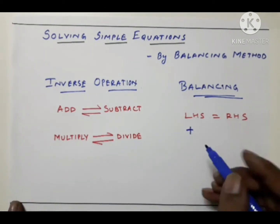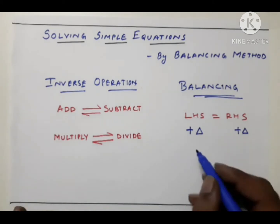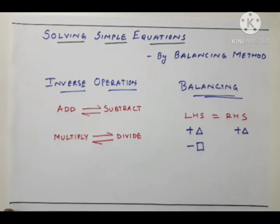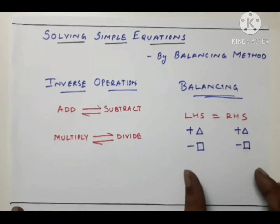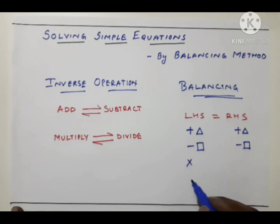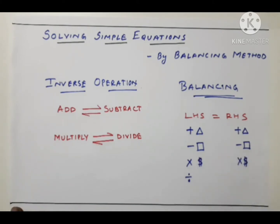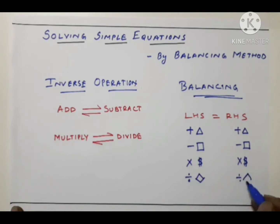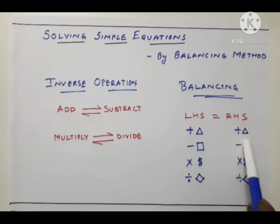For example, if we add a triangle on the left side, to balance it we have to add another triangle on the right side also. Suppose we subtract a square from the left side — we have to subtract a square from the right side too. Similarly for multiplication and division: whatever you multiply, you must multiply both sides; whatever you divide, you must divide both sides. Whatever operation is done on the left hand side, the same operation with the same number must be done on the right hand side — then only the equation remains balanced.